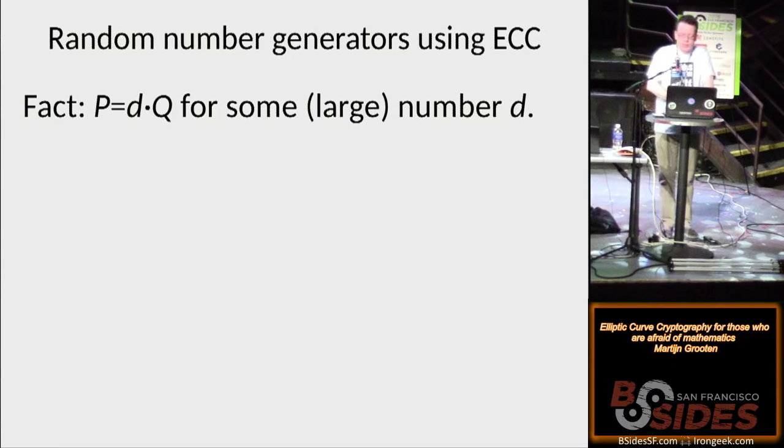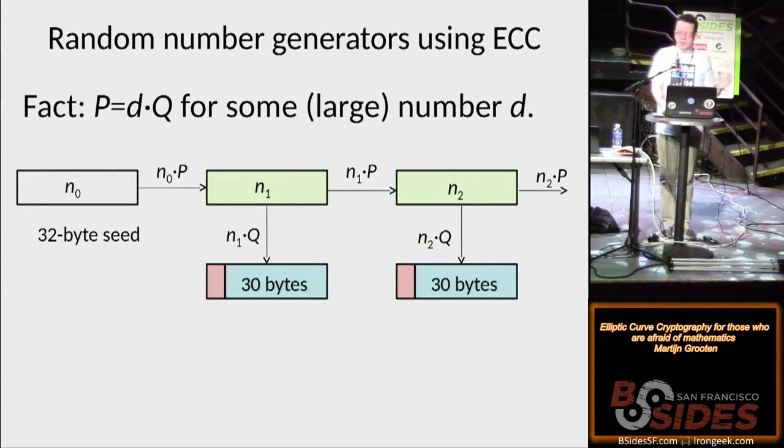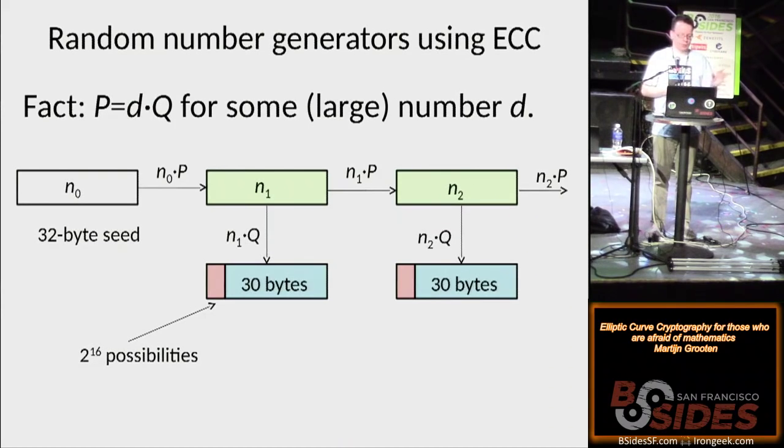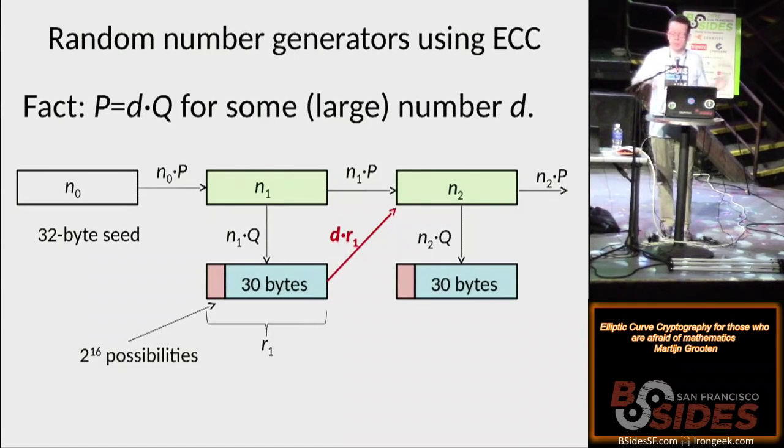Now there's an interesting fact. There is a large number d so that p equals d times q, and the discrete logarithm problem says that you can't compute d. But imagine someone somehow has access to this number d. What can they do? Well, they only have the 30 bytes out of 32, but there's only 65,000 possibilities. It's actually very easy because the point has to be on the curve, and it's very easy to actually get the full random output, so the full 32 bytes. And let's call this r1. So an adversary has access to r1.